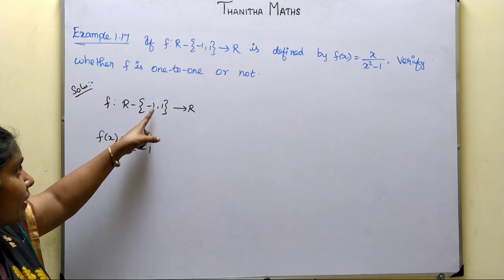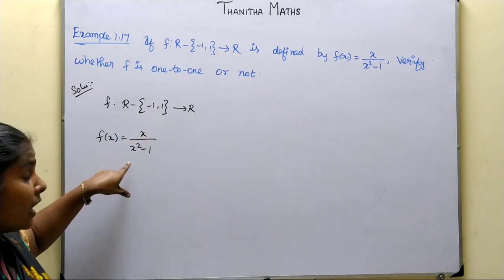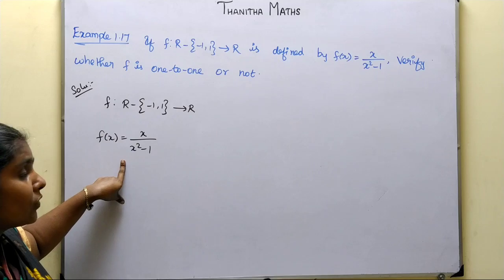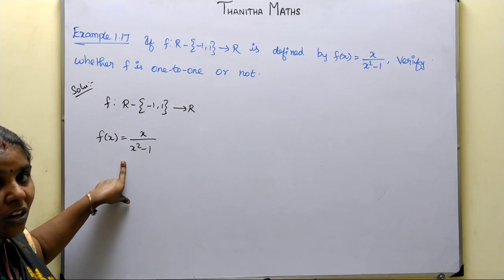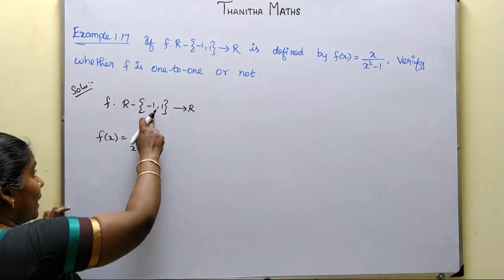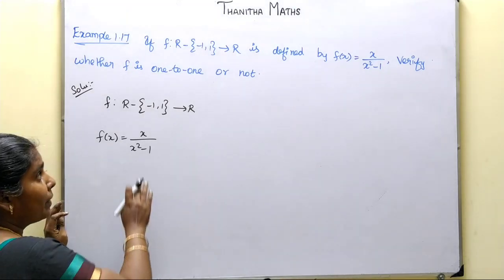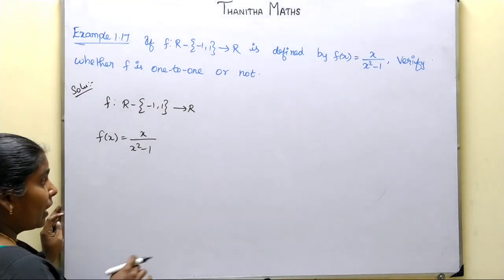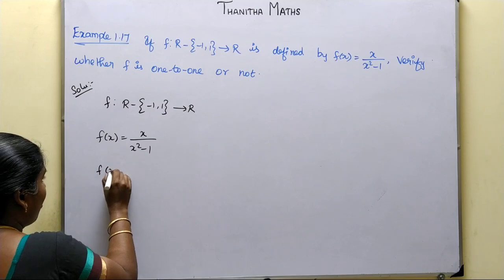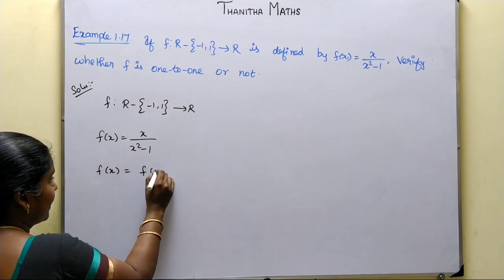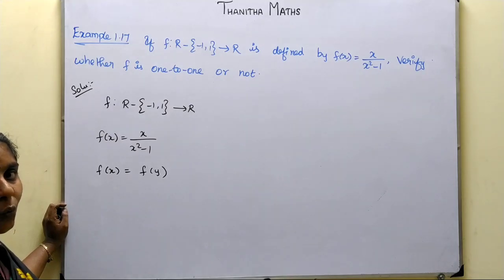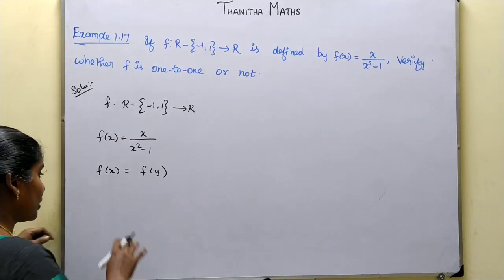Suppose x equals minus 1 makes the denominator 0 — if we include it, this is not a function. So minus 1 is not in the domain. If we remove those values, the function exists. Now we say that the function is well-defined.